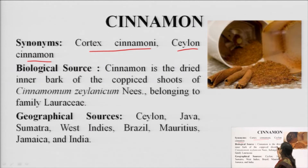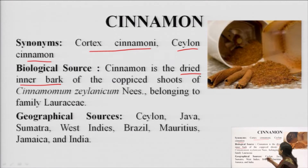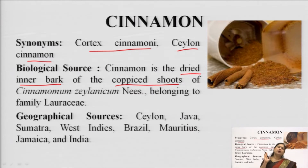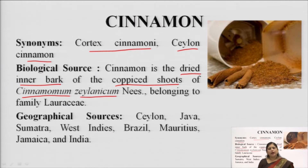The main drug is the dried inner bark. When the bark is removed, a little fermentation is done so that the external layer gets removed and only the inner bark remains. It is the inner bark of the coppiced shoots — coppiced shoots means the stem is cut into small pieces, which is coppicing, and the shoot is the stem part. The biological name is Cinnamomum zeylanicum belonging to the family Lauraceae.